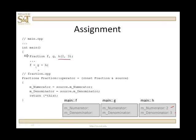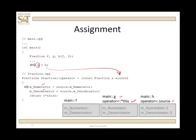When we execute this operation, g is star this — it is the calling object. When I execute then, g in main is the calling object and h becomes the source. In the definition of the function, when I refer to the numerator and denominator, that's going to be for g, the calling object. h goes in for source. The source's numerator is assigned to the calling object's numerator; source's denominator is assigned to the calling object's denominator — numerator becomes 2, denominator becomes 3. And then I'm going to return star this, or return the calling object, which would be g.